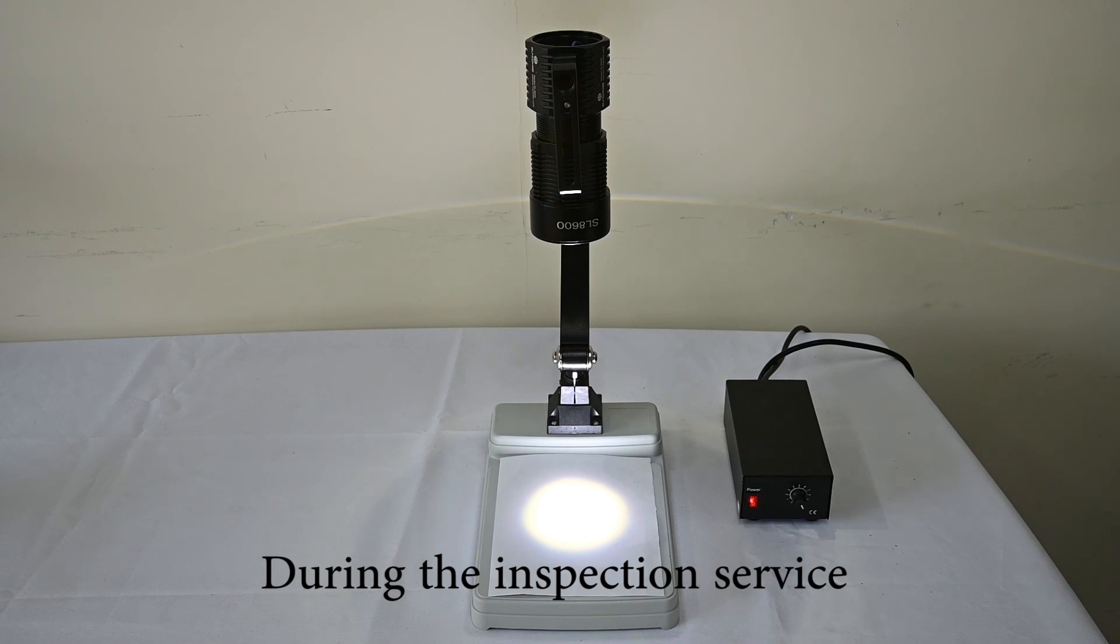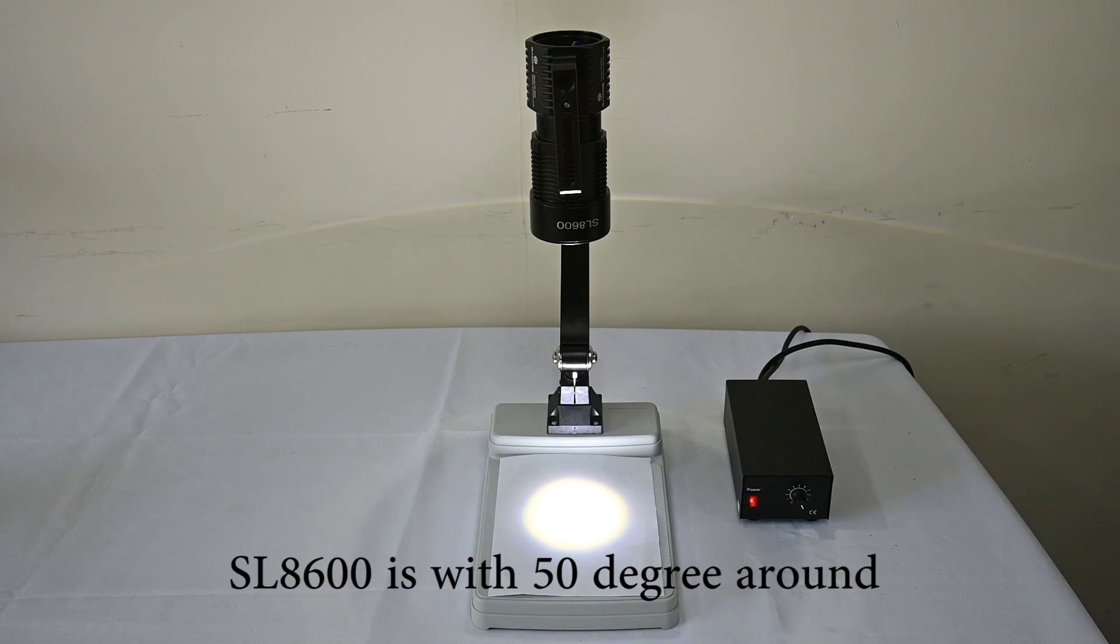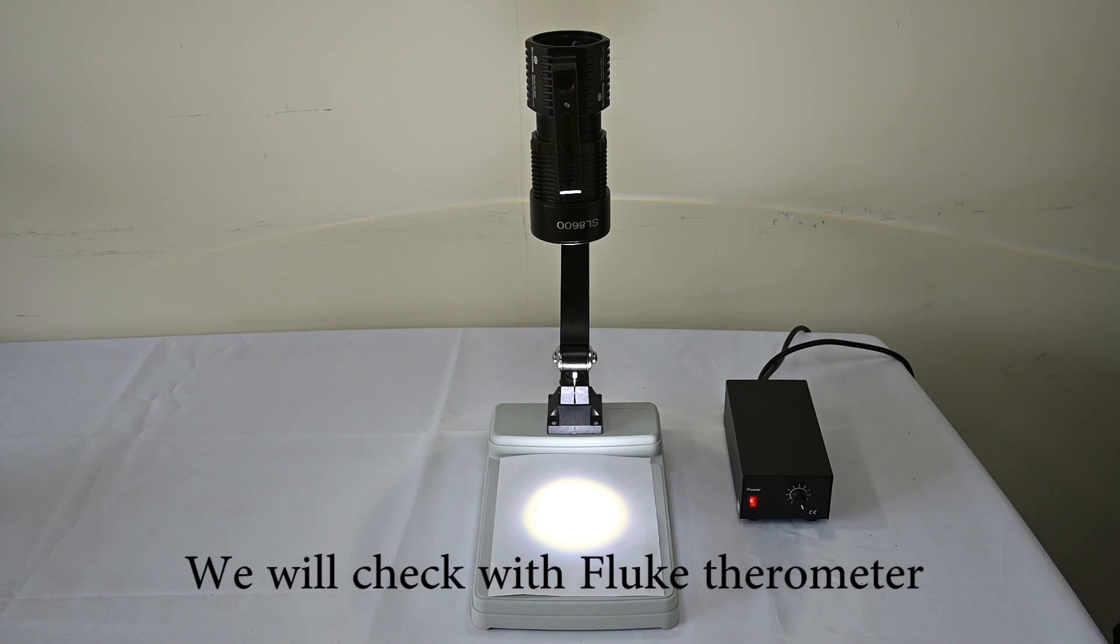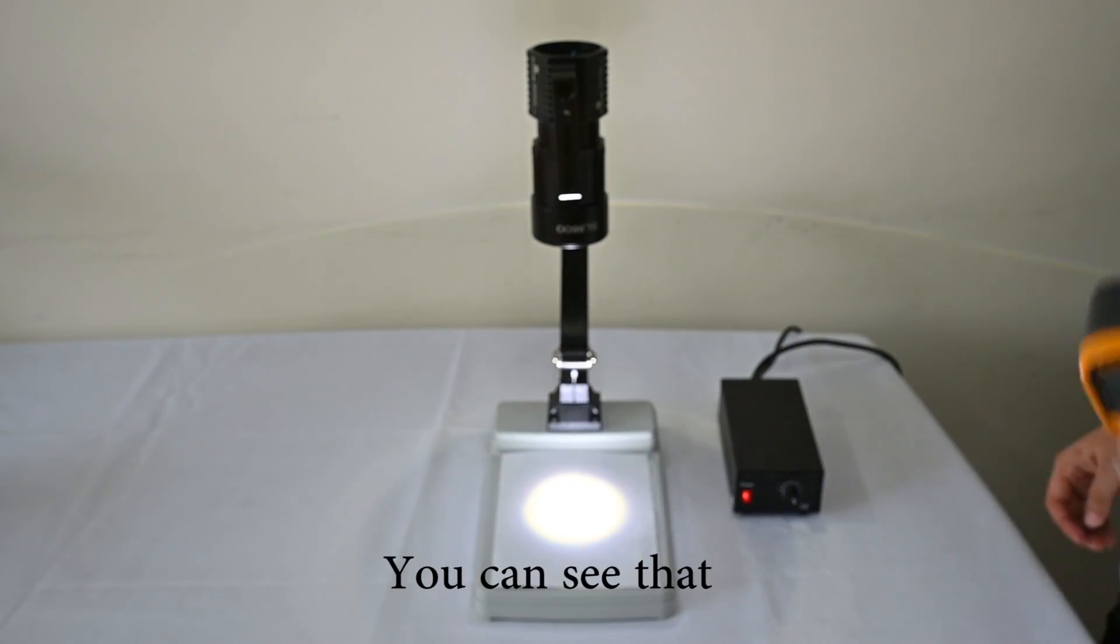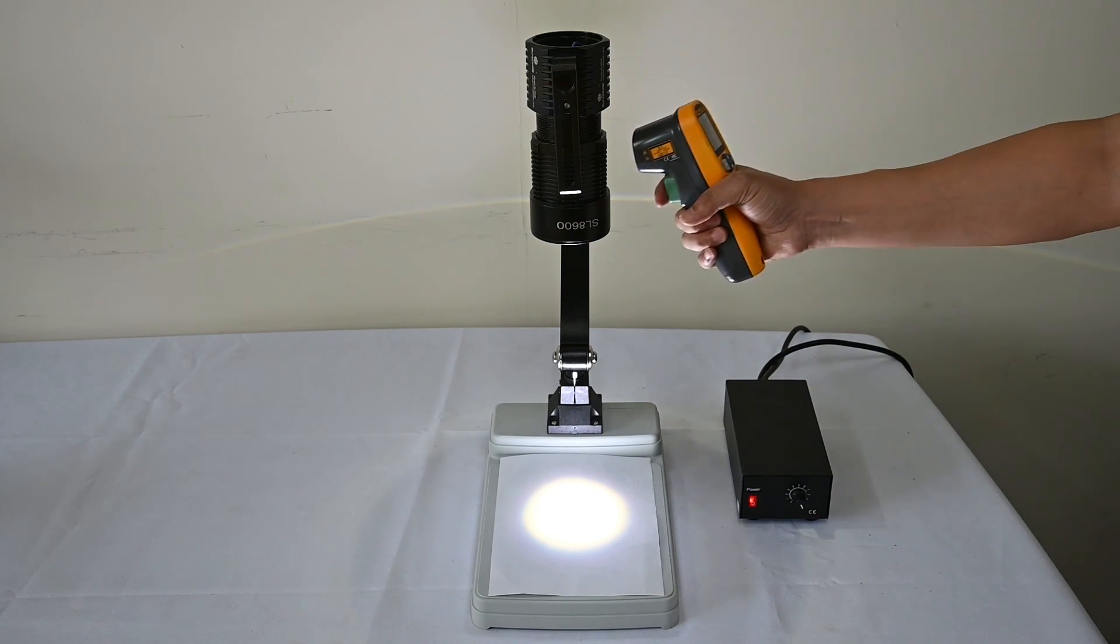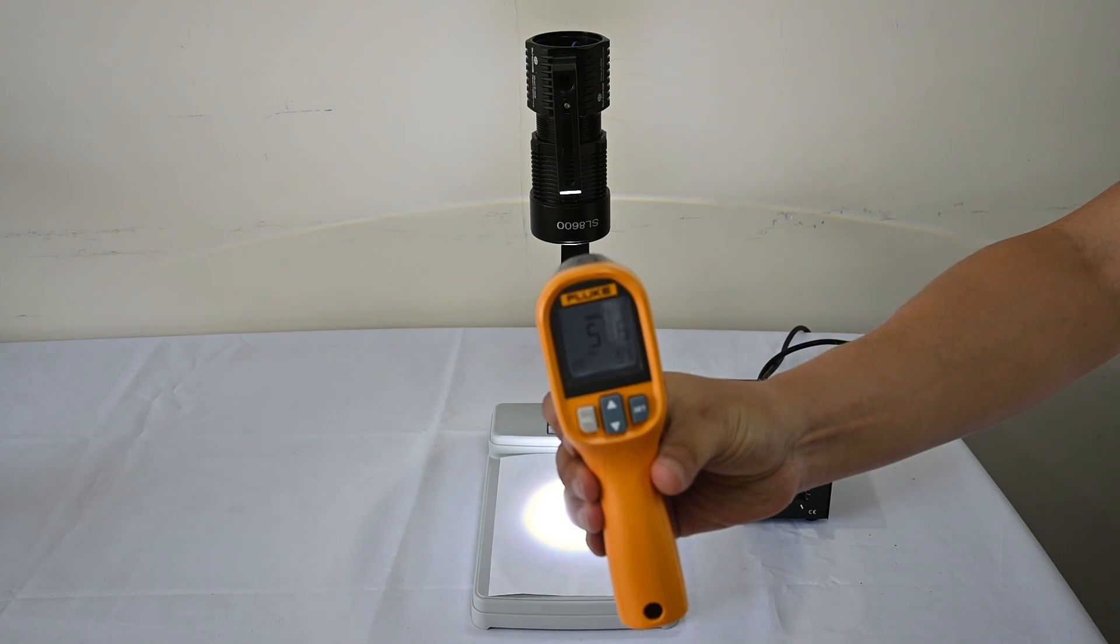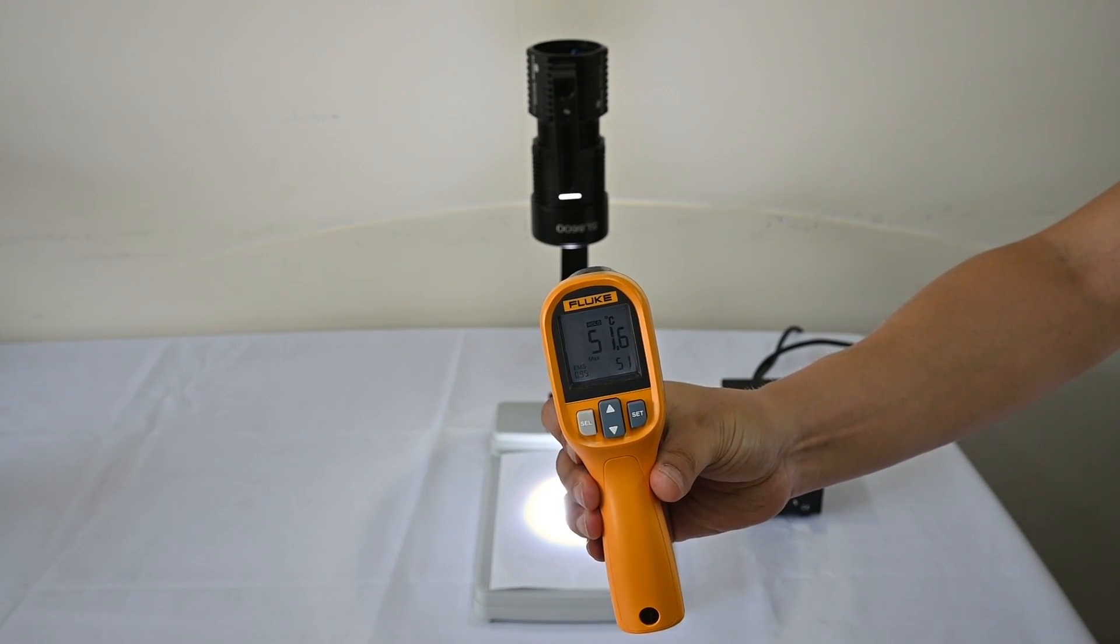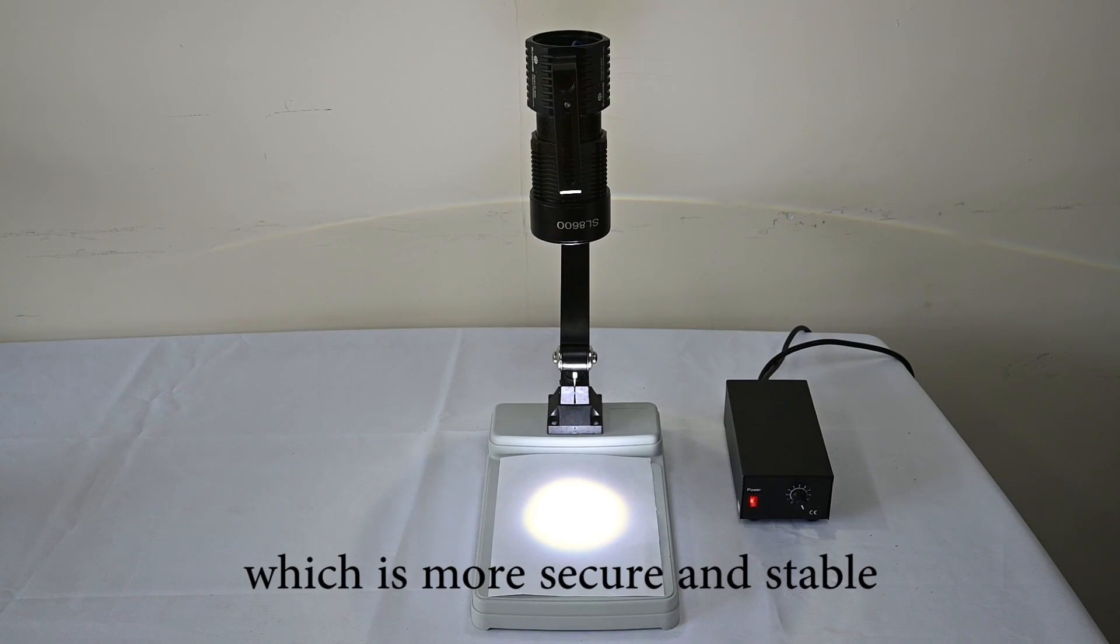During the inspection service, the mercury lamp temperature could be as high as 150 degrees. SL-8600 is with 50 degrees around. And now, we will check with the Fluke thermometer. You can see that, after 6 hours working, the real surface temperature is 51 degrees, which is more secure and stable.